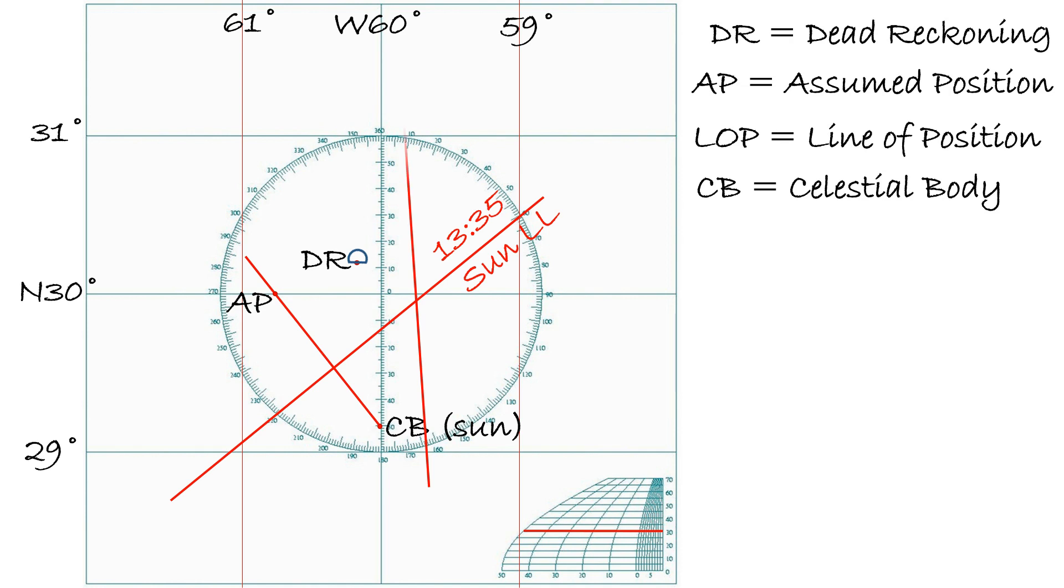You repeat the process with another celestial body or two, and your actual position lies where these lines of position intersect. You label that position as FIX along with the time and date you obtain the FIX in parentheses. In the future, you'll calculate your next dead reckoning by estimating your speed and direction from this point and repeating the process.